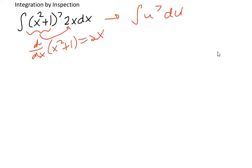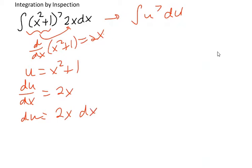And since that's the case, we could use a u substitution. So if you want to use a u substitution, you would let u equal x squared plus 1, which means du/dx is equal to 2x, which means du is equal to 2x dx.